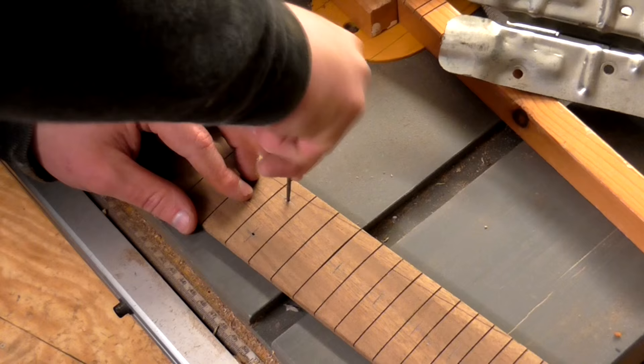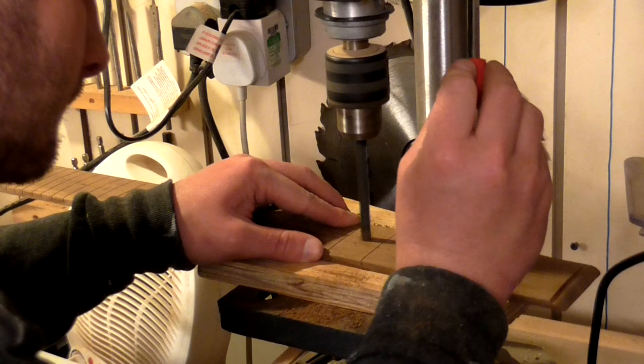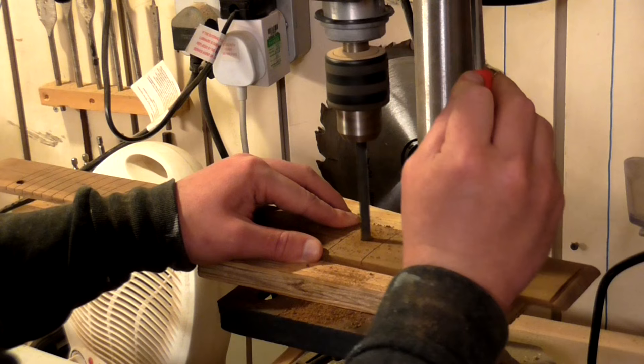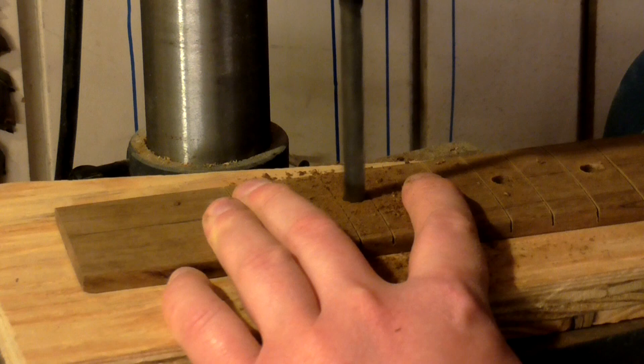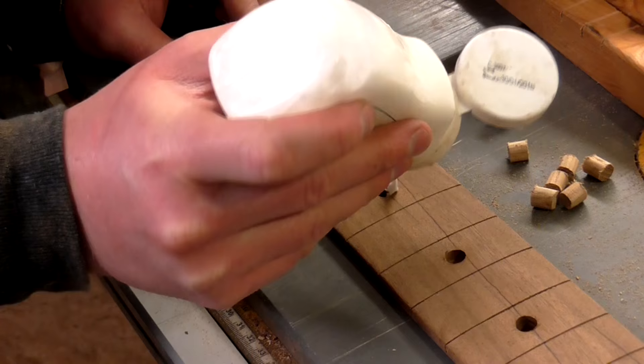I used an ice pick to centre punch each fret marker position to help guide the drill bit and then drilled them using an 8mm bit on the drill press. I sliced the dowel into short pieces on the band saw and then I could begin gluing them in one by one.